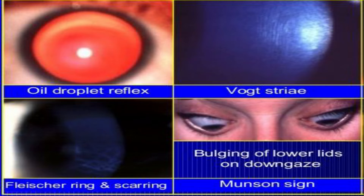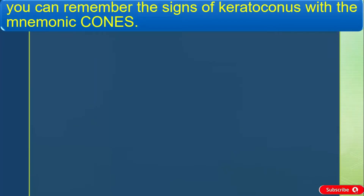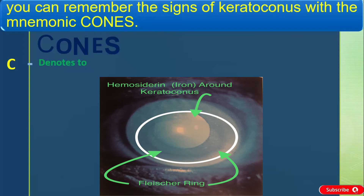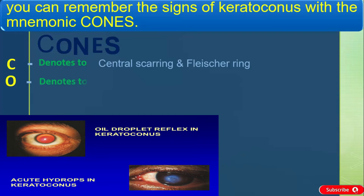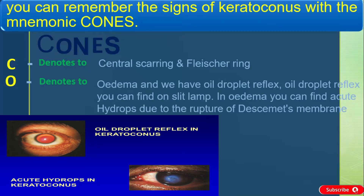Friends, you can remember the signs of keratoconus with the mnemonic CONES — C, O, N, E, S — in which C denotes central scarring and Fleischer ring. O denotes edema and oil droplets. In edema, you can find acute hydrops due to the rupture of Descemet's membrane, and the oil droplet reflex you can find on slit lamp.